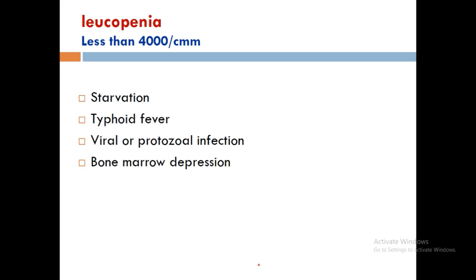Leukopenia is when the WBC count is less than 4,000 WBCs per cubic mm of blood. Its causes are mostly abnormal and include prolonged starvation, typhoid fever, viral or bacterial infection, and bone marrow depression.